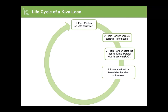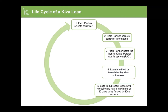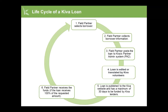Next, the loan will be published on Kiva's website for lenders, located at www.kiva.org. Once published, the loan will have a maximum of 30 days to raise 100% of the requested amount from Kiva lenders. If the loan receives 100% of the requested amount, Kiva will wire the funds to your organization. You will then use the funds to disperse the loan to the borrower, or to backfill the loan if it has already been dispersed to the borrower.